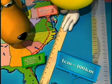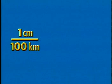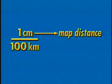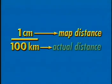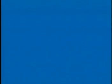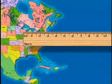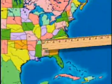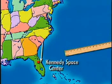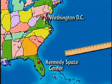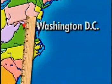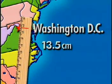The scale can be written as the fraction one centimeter over 100 kilometers. The first number, one centimeter, represents the map distance, and the second number, 100 kilometers, represents the actual distance. First, using a metric ruler and the given map, measure the linear distance from Kennedy Space Center to Washington, D.C. On Norbert's map, this distance is approximately 13 and a half centimeters.